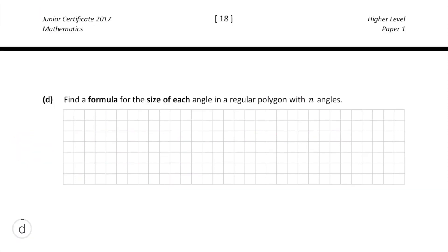In part d all we have to do is turn our answer from part c into a formula. In part b we already worked out that the formula for the sum of the angles in the polygon is 180 by n minus 2.